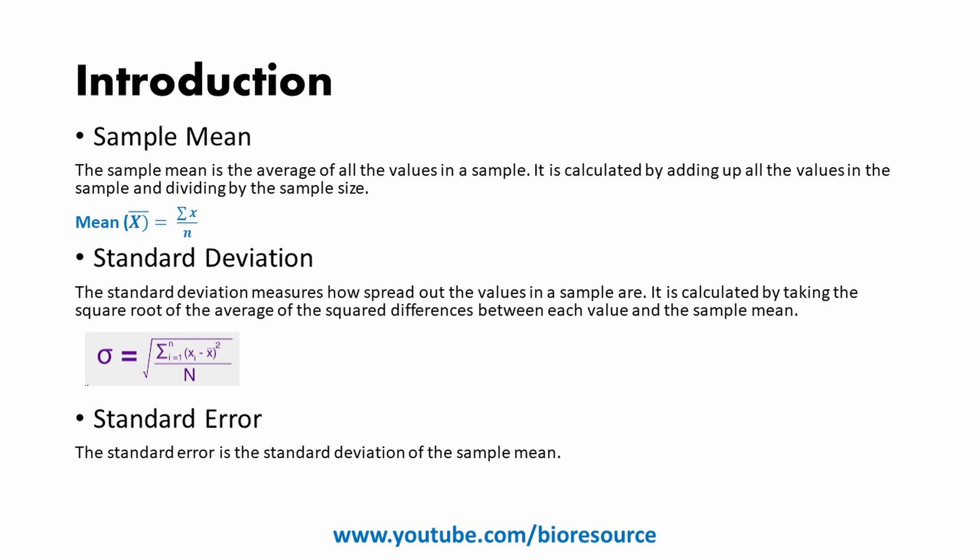The sample mean is the average of all the values in a sample. It is calculated by adding up all the values in the sample and dividing by the sample size. The standard deviation measures how spread out the values in a sample are. It is calculated by taking the square root of the average of the squared differences between each value and the sample mean. Standard error is the standard deviation of the sample mean, calculated by dividing the standard deviation by the square root of sample size.